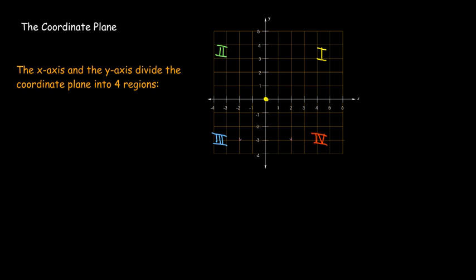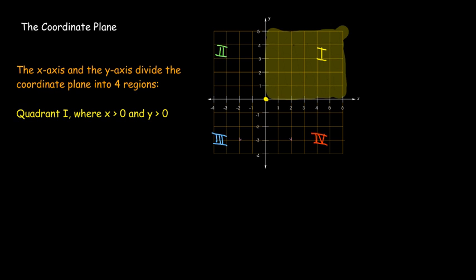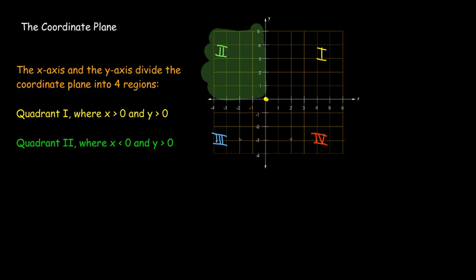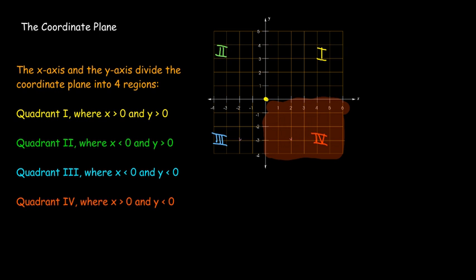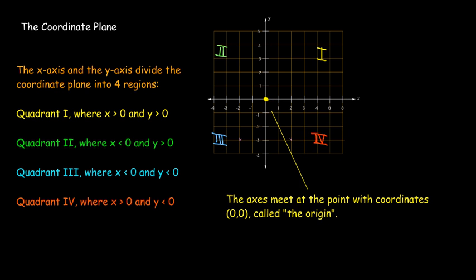The x and y axes divide up the coordinate plane into four regions. We call them quadrants, and they get numbered one to four going in a counterclockwise direction. Quadrant one is where both the x and y coordinates are positive. In quadrant two, x is negative but y is positive. In quadrant three, both are negative. In quadrant four, x is positive and y is negative. The point where the axes meet has coordinates (0, 0) — we call that the origin.